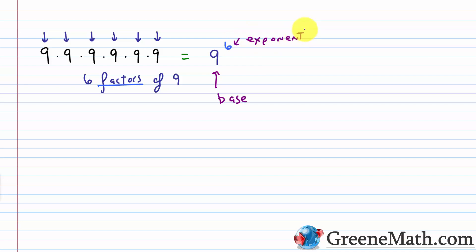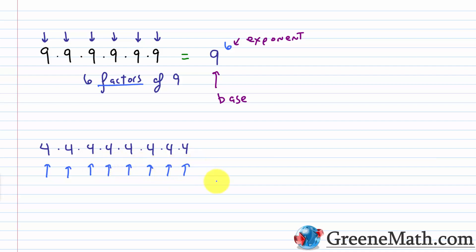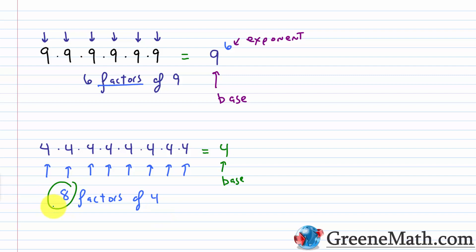As another example, let's say I had 4 times 4 times 4 times 4 times 4 times 4 times 4 times 4. Counting these up, I have 8 factors of 4. So that means I can write this as 4 — that's the number being multiplied by itself, that's going to be my base — raised to the 8th power, because I have 8 factors of 4. So 4 raised to the 8th power, and 8 is my exponent.